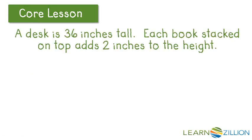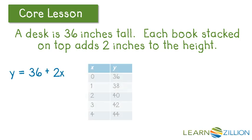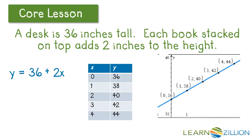So let's try another one. A desk is 36 inches tall. Each book stacked on top adds 2 inches to the height. So here's the equation, the table, and the graph.